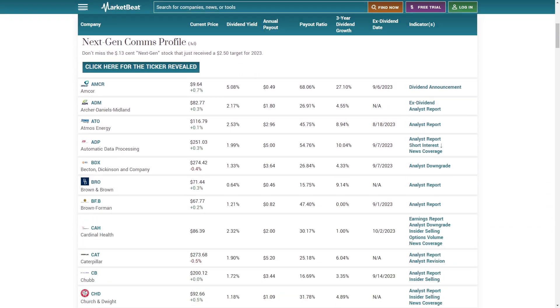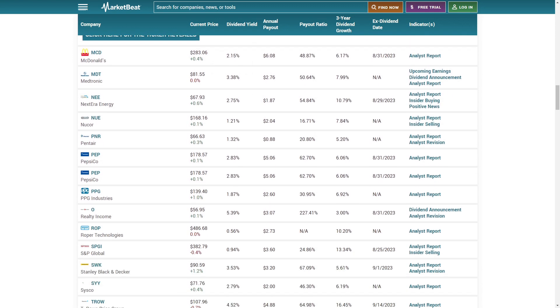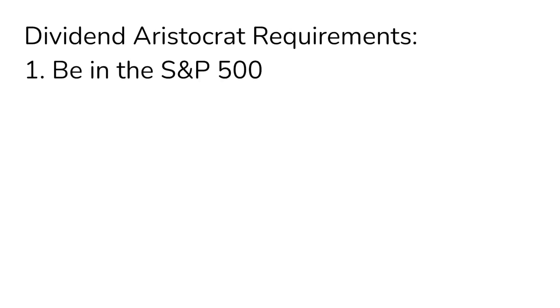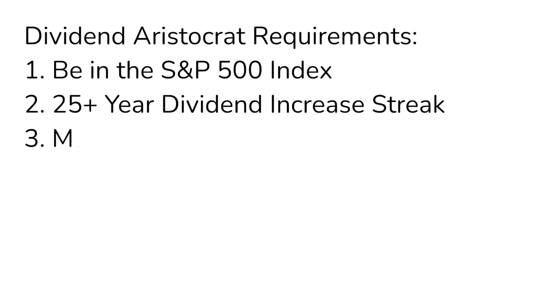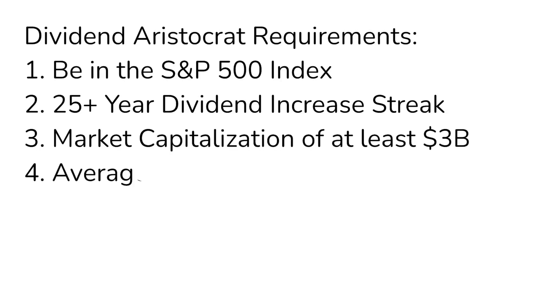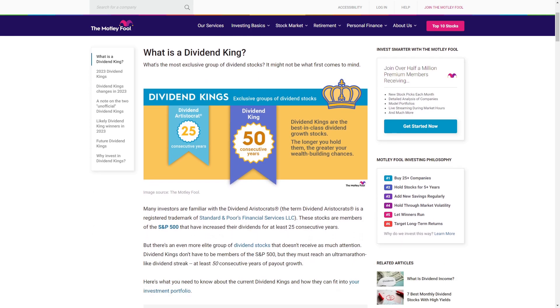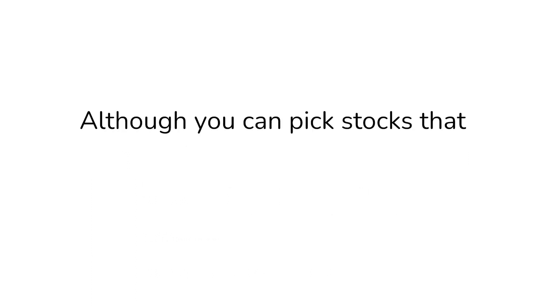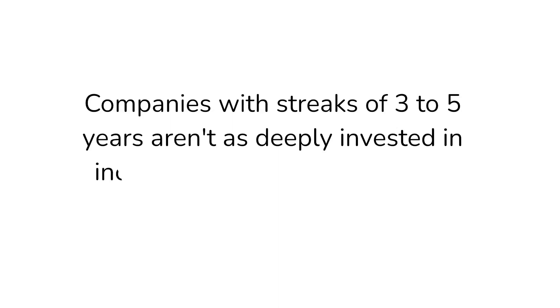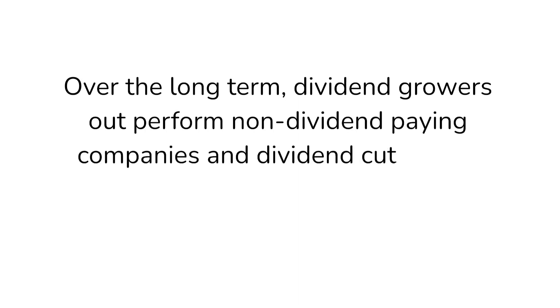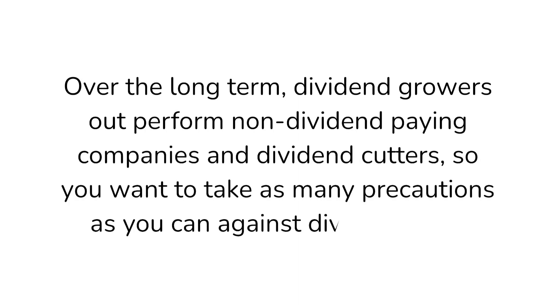MarketBeat is also a great resource for perpetual dividend raisers. They have a list of dividend aristocrats and dividend kings that has proved very useful to me. For a stock to qualify as a dividend aristocrat, they must be in the S&P 500 index, have increased their dividend for at least 25 years, have a market capitalization of at least $3 billion, and average at least $5 million in daily share trading for the past 3 months. To qualify as a dividend king, the company must meet all the requirements of a dividend aristocrat, but also have a dividend increase streak of at least 50 years. I wouldn't recommend companies with streaks of only 3 to 5 years, as they aren't as deeply invested in increasing their dividend.